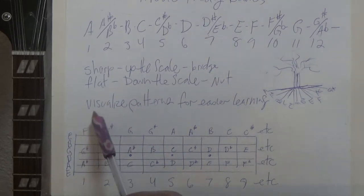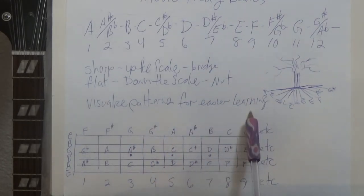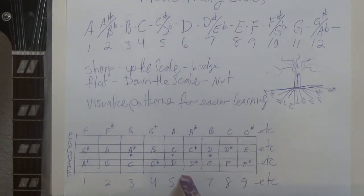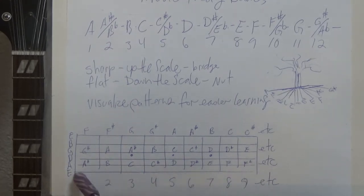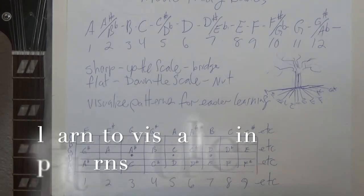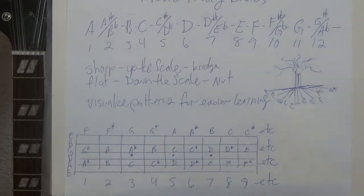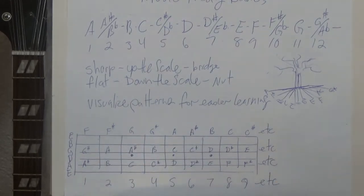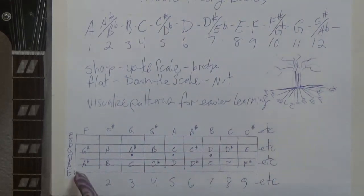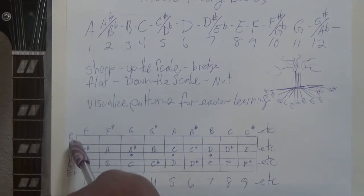Now if you visualize in patterns, it makes for easier learning. Right here I've written out a diagram of the guitar fretboard. We have our six strings — E, A, D, G, B, E. Now when you're looking at sheet music, your lowest note is always going to be on the bottom, so it's kind of like your guitar is upside down. Your lowest string, the top one, is going to be here on the bottom — so that's your E string, then your A string, D string, G string, B string, E string.